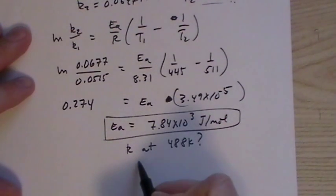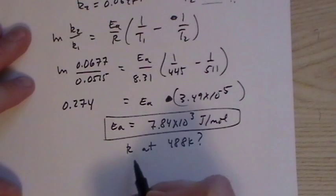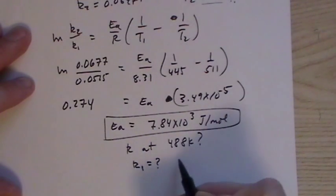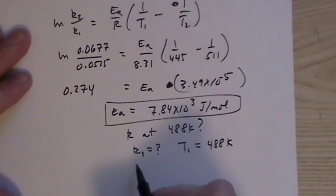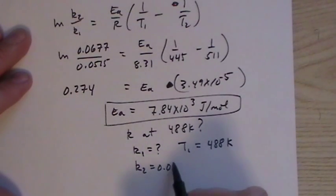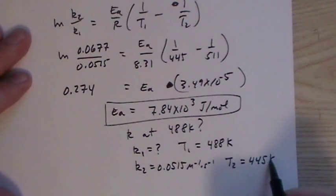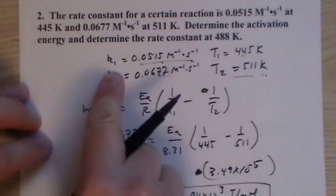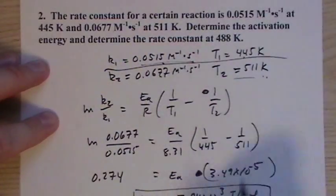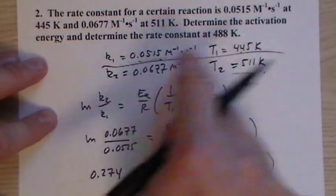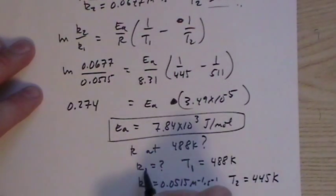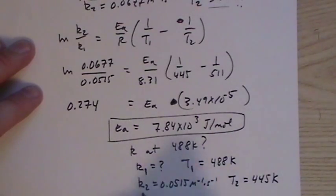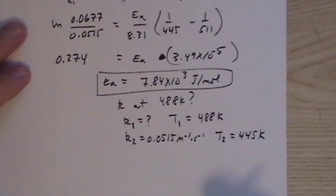Now they want to know K at 488 Kelvin. That's what's unknown. We'll make this, let's just call it K1, just to show that we can. K1 is unknown. T1, we're going to consider to be 488K. Now the K2, what are we going to pick that to be? Well, let's use 0.0515 and T2. That was K1 and that was T1. It doesn't matter. It's the same system. We can label it whatever we want as long as we make them correspond. So we wanted a new K1 and T1, so we made our old ones K2 and T2. So it doesn't matter as long as we make sure that they correspond.